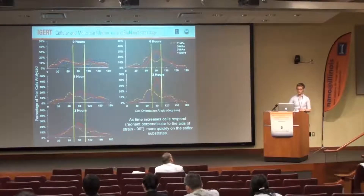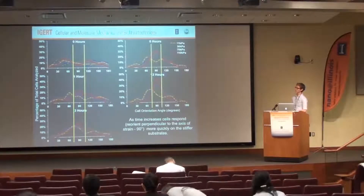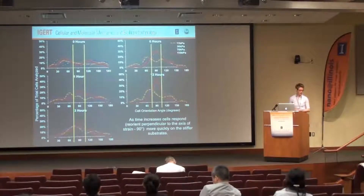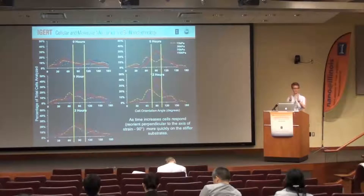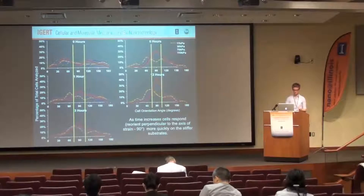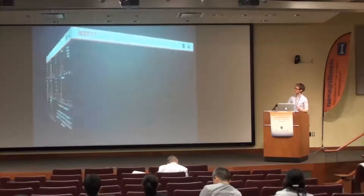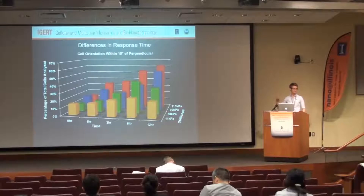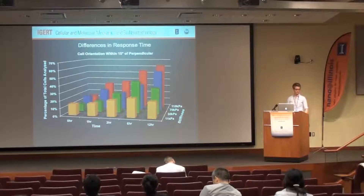Those are all fibroblasts. Looking at five different graphs at once can be overwhelming, so I took out the response region I was interested in — within 15 degrees of that reorientation response window. This shows it a little better: by stiffness, you can see there's a quicker response on the stiffer substrate, the red line, compared to the orange or any of the other colors.